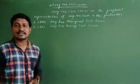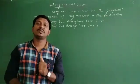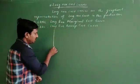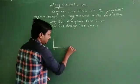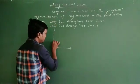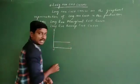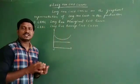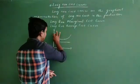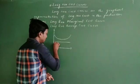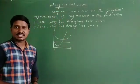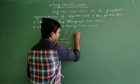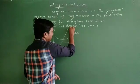We need to understand how these curves move, what are the reasons for their movement, and we will do that with the help of a diagram. On the OY axis and OX axis, I draw a price line. Then I draw the Long Run Average Cost curve and the Long Run Marginal Cost curve starting from below.